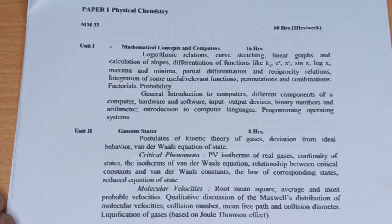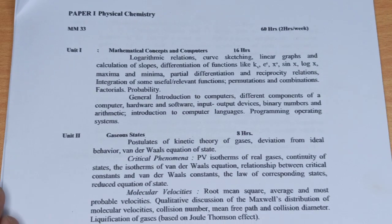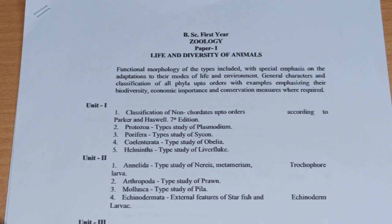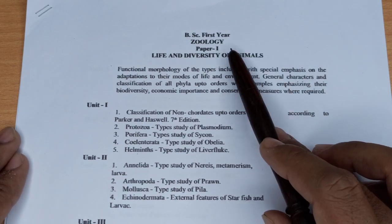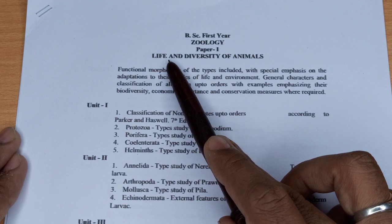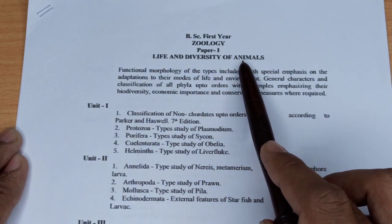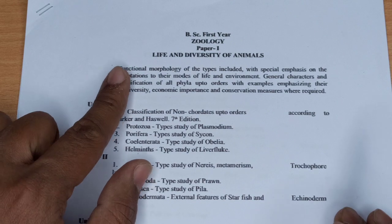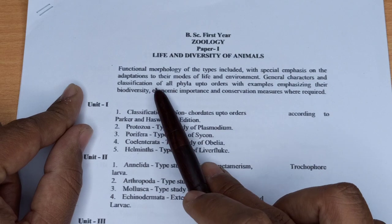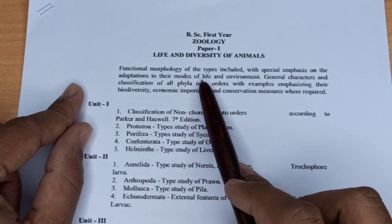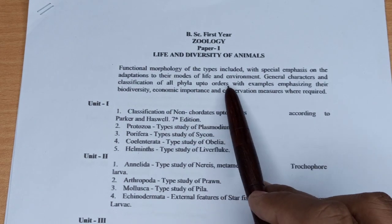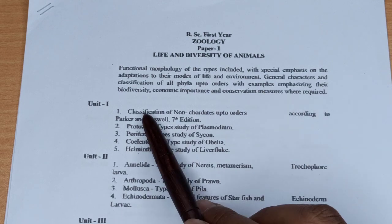तो यह हुआ Chemistry का syllabus। अब Zoology की बात करते हैं। आप screen पर देख पा रहे हैं यह BSC First Year Zoology Paper No. 1 का syllabus है जिसमें हम Life and Diversity — variety of animals के बारे में बात करेंगे। इसमें functional morphology of types, adaptations to modes of life and environment, general characters and classification of all phyla up to orders with examples emphasizing biodiversity शामिल हैं।